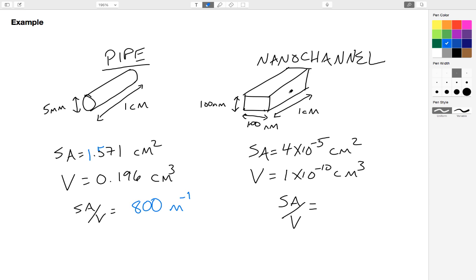Now if I think about a nanochannel which is orders of magnitude smaller, let's assume it's got a square cross section and the width and height is 100 nanometers both, but the same length as my pipe, so 1 centimeter long. If I calculate the surface area to volume ratio of this channel, I get 4×10⁻⁵ cm² and a volume of 1×10⁻¹⁰ cm³.